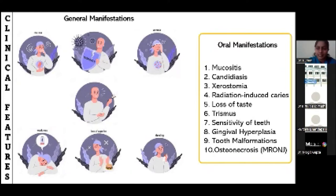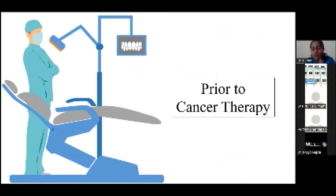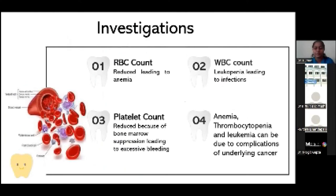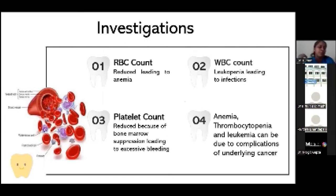I have divided the oral care guidelines into three parts: prior to cancer therapy, during cancer therapy, and post-cancer therapy. Before initiating cancer therapy, when a patient walks into a dental clinic, you cannot jump directly into treatment. First, you must consult the oncologist to understand the nature of the cancer and necessary precautions. As dentists, it is our duty to take a proper medical history and record of what the patient is going through, then post them for investigations — because cancer itself can cause anemia, leukopenia, and thrombocytopenia, which can lead to post-operative complications.